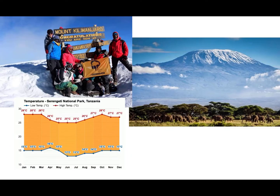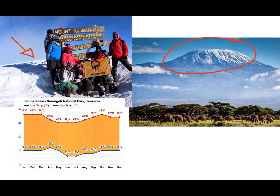A great African example of this is Mount Kilimanjaro. Mount Kilimanjaro is found in Tanzania. It lies along the equator, which you should know is normally a very hot place. But it doesn't matter what time of year it is, whether it's winter or summer — Mount Kilimanjaro is always covered in snow at the top. Here's a really cool photograph of some people who have summited Mount Kilimanjaro, and you can see that they are all bundled up in their warm clothes.